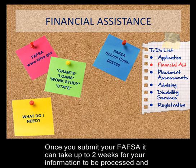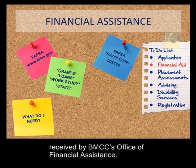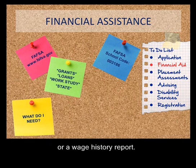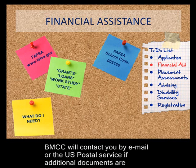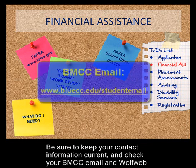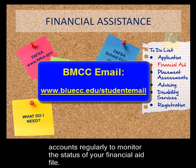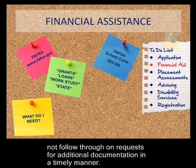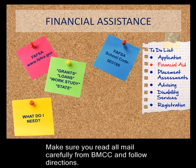Once you submit your FAFSA, it can take up to two weeks for your information to be processed and received by BMCC's Office of Financial Assistance. You may be required to submit additional information, such as copies of your federal tax forms or a wage history report. BMCC will contact you by email or U.S. Postal Service if additional documents are required. Be sure to keep your contact information current and check your BMCC email and WolfWeb accounts regularly to monitor the status of your financial aid file. The most common reason for delays is that students do not follow through on requests for additional documentation in a timely manner.